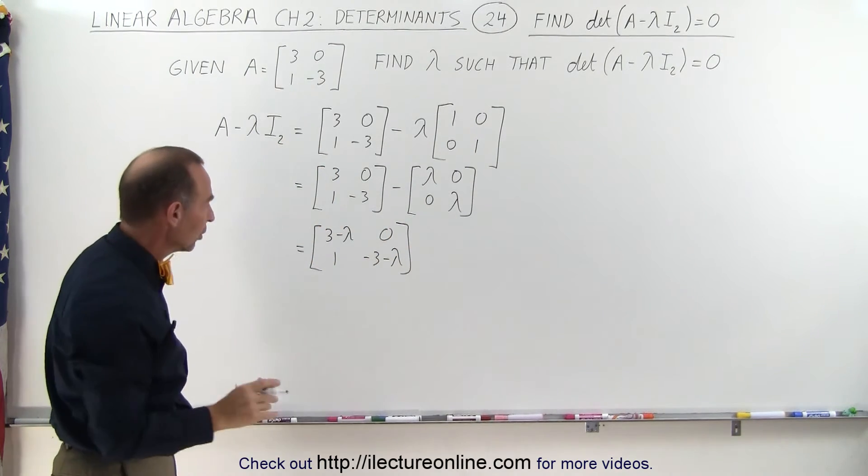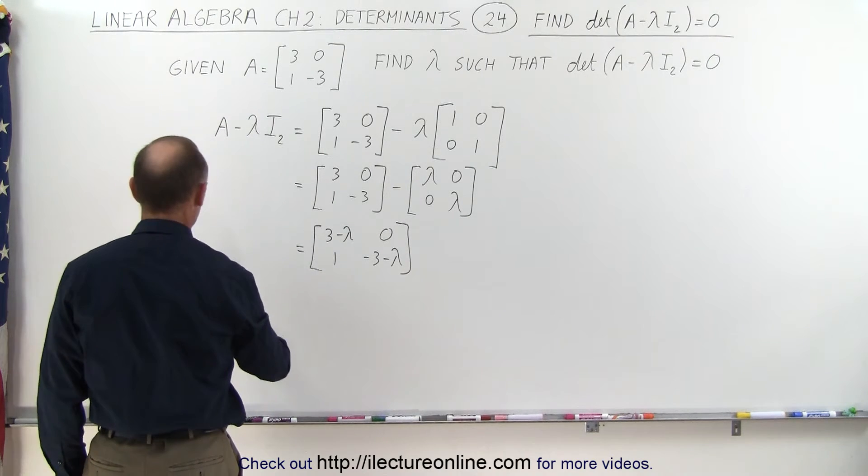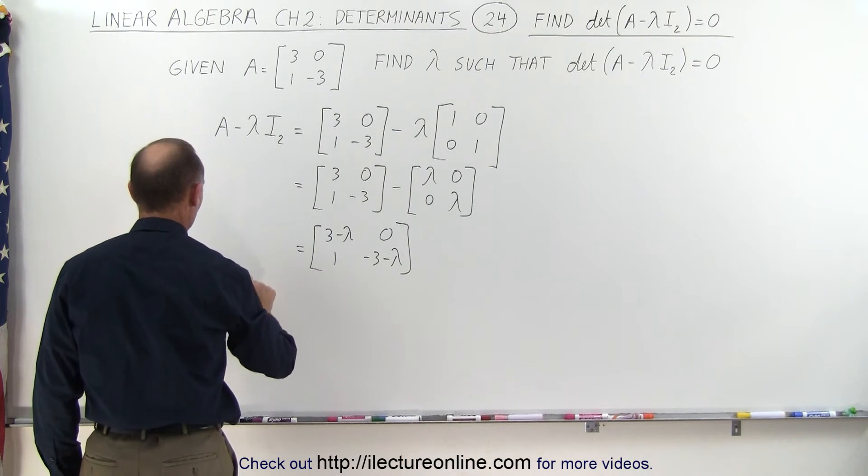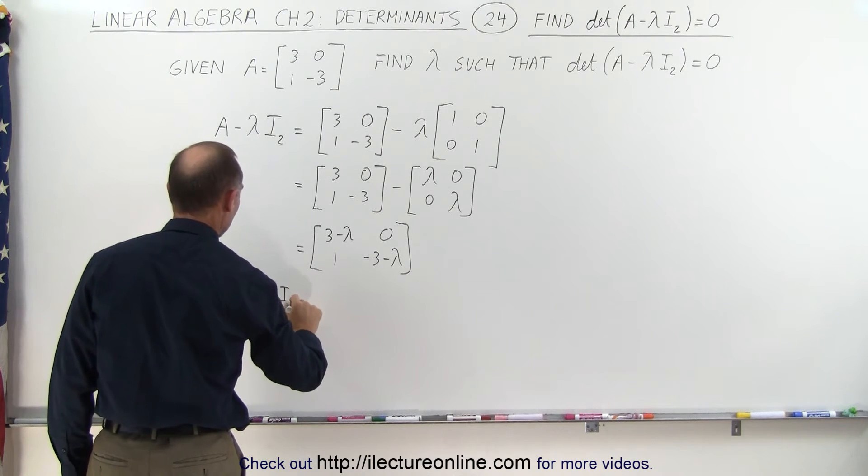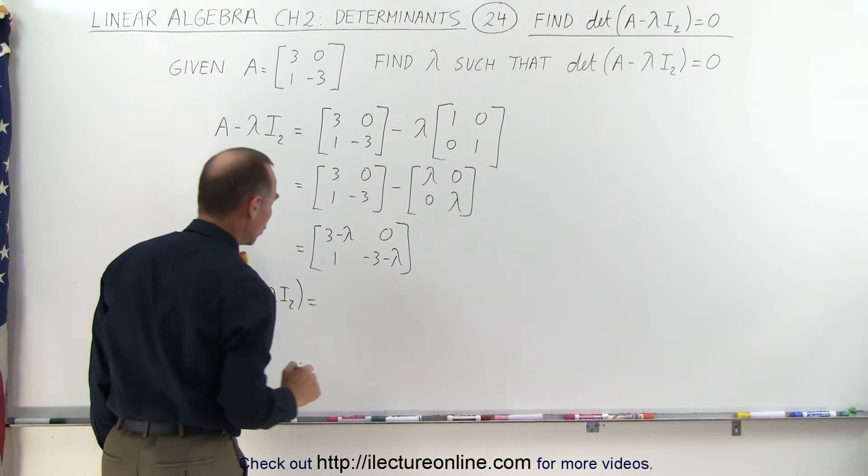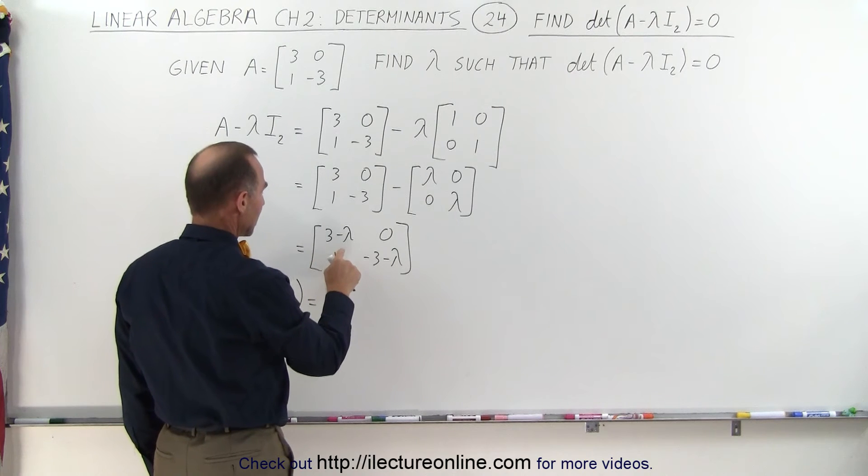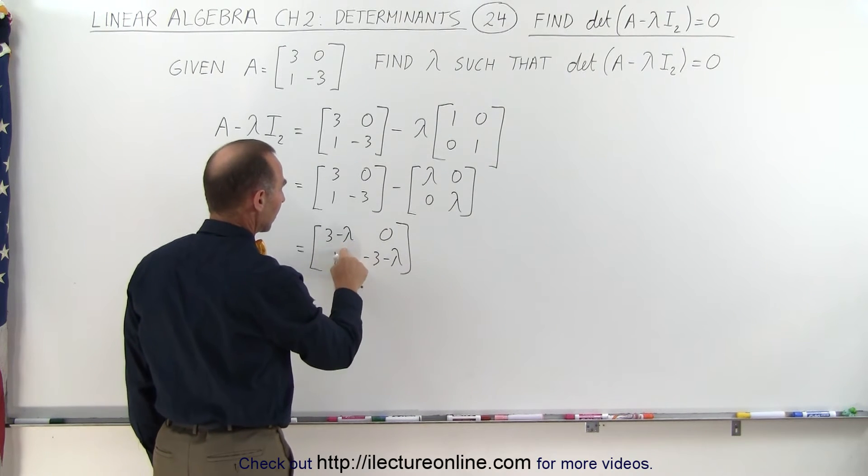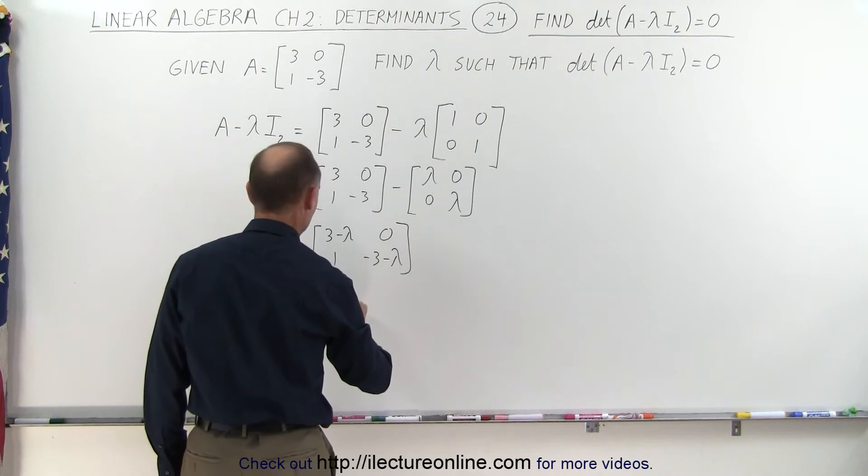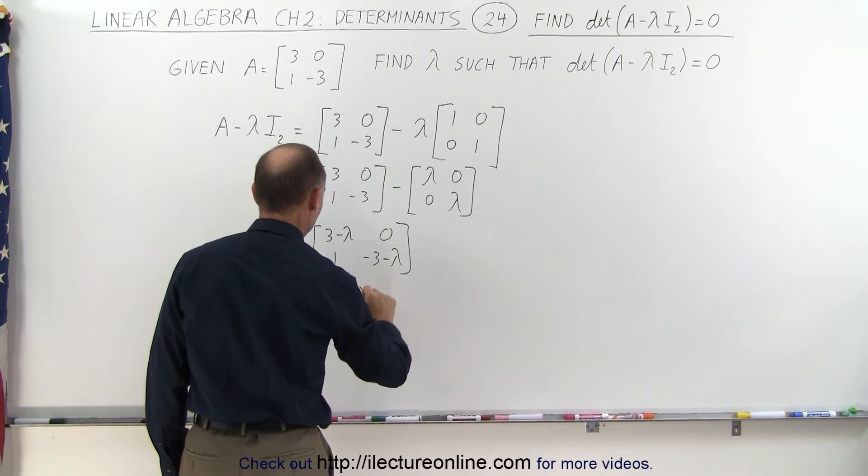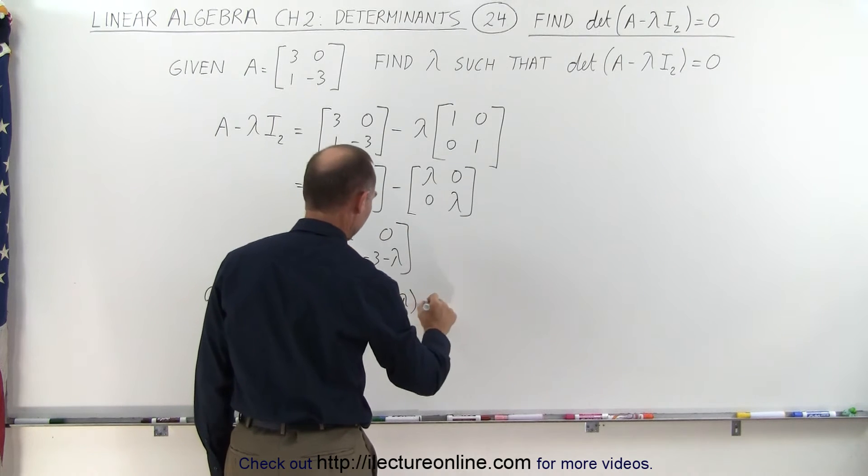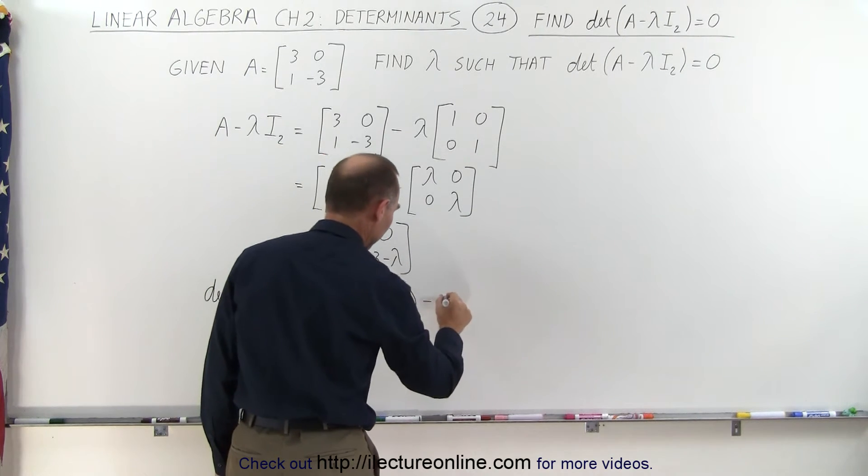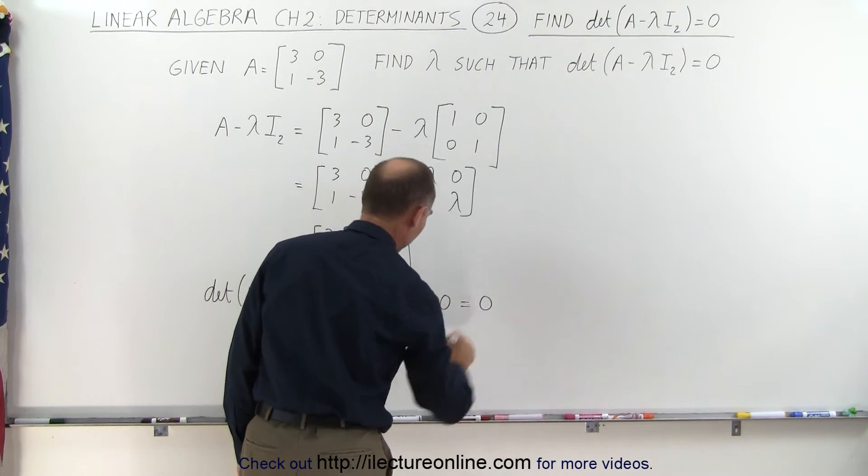Now we're going to take the determinant of this matrix. So now we take the determinant of the matrix A minus lambda times the identity matrix, which is equal to the cross product here, so we get 3 minus lambda multiplied times minus 3 minus lambda, and subtract from that when we multiply those two we get zero, and that must equal zero.